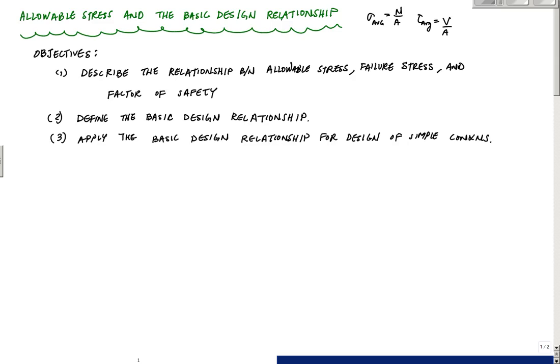And really, the idea behind engineering design is to select material and geometry, like cross-sectional area, steel, aluminum, composite material. Select the material and geometry to satisfy